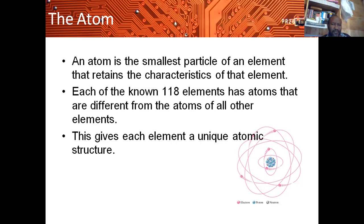It is the smallest particle of an element that retains the characteristics of that element, and the characteristics here are both chemical and physical characteristics. So far we have 118 known elements, and out of those 118 known elements means we have 118 different types of atoms with different atomic configurations or structures.